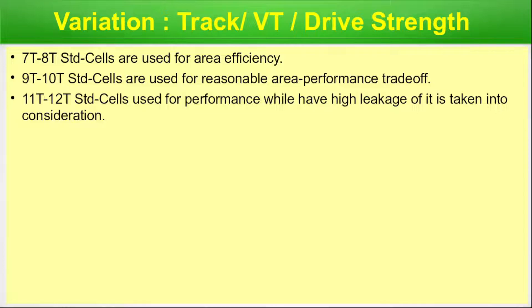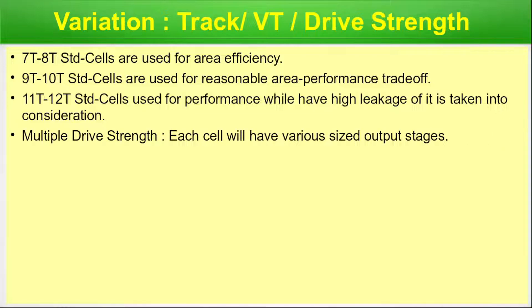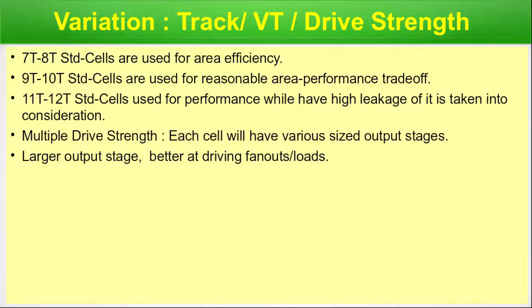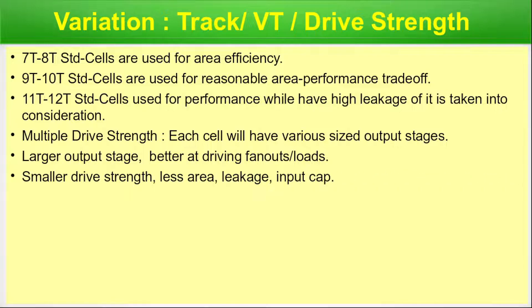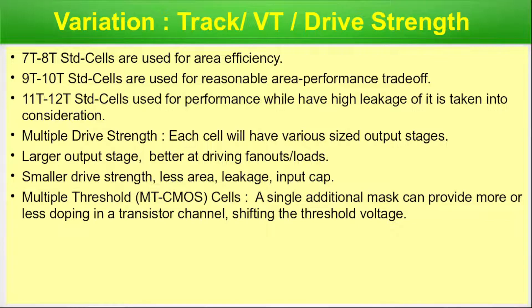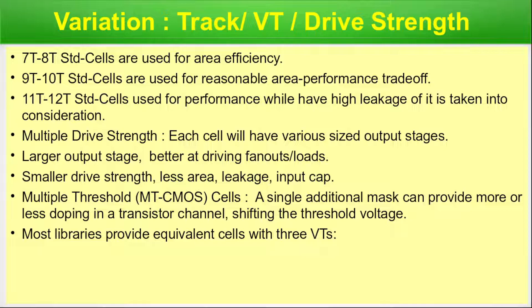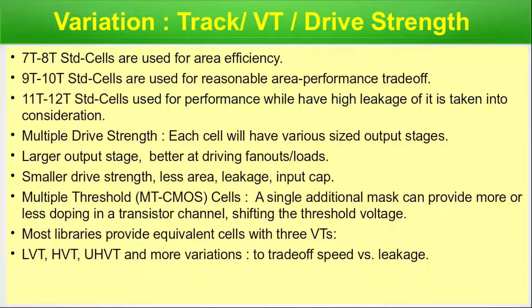Regarding multiple drive strengths: each cell will have various sized output stages. A larger output stage provides better driving capability for fan-outs and loads; a smaller drive strength means less area, leakage, and input capacitance. For multi-threshold CMOS (MTCMOS) cells, a single additional mask can provide more or less doping in a transistor channel, shifting the threshold voltage. Most libraries provide equivalent cells with three VTs: LVT, HVT, and UHVT.